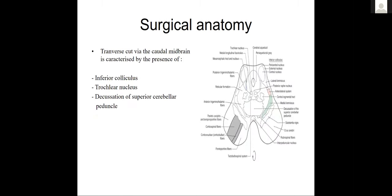A transverse cut at the caudal midbrain depicts the inferior colliculus, made up of a pericentral nucleus, external nucleus, and central nucleus. Also present are the trochlear nucleus, the decussation of the superior cerebellar peduncles, and ascending/descending white matter systems including the medial lemniscus, anterolateral system, and anterior trigeminal fibers.